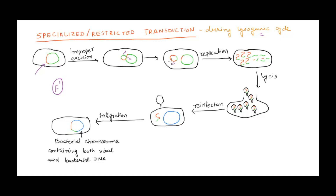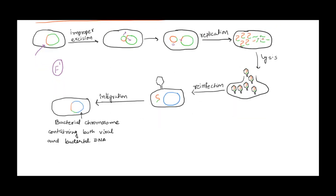As a result, you get a viral particle that contains some part of the bacterial genome but has left behind some of its own genome. After excision, it undergoes replication, degrades the host chromosome, and replicates its DNA — which now contains bacterial chromosome as well. All copies will have a portion of bacterial chromosome. They get assembled and packed, and this phage can then reinfect another host, where it reintegrates into the bacterial chromosome.